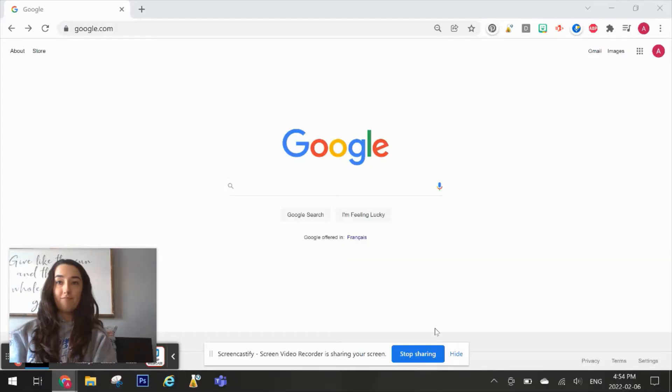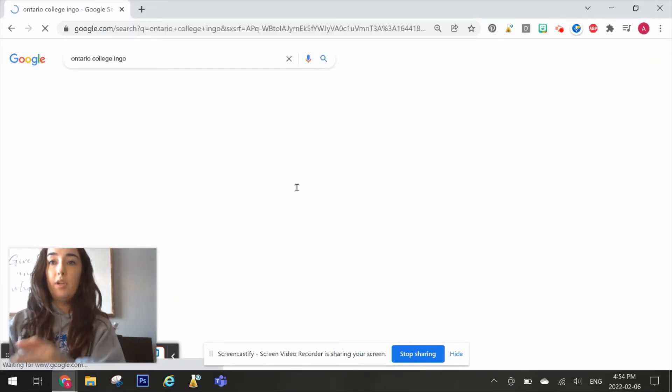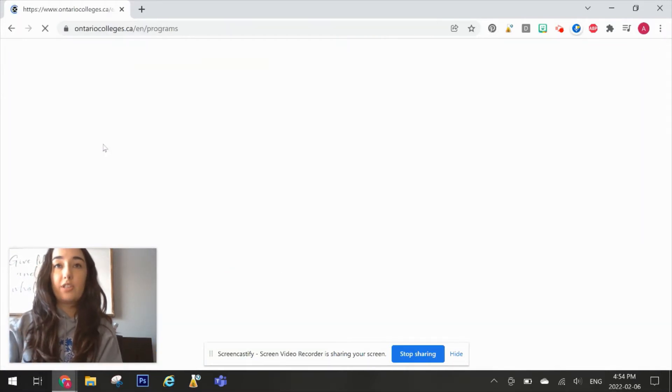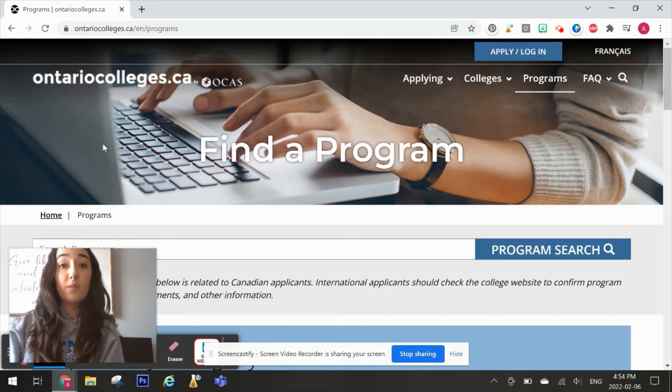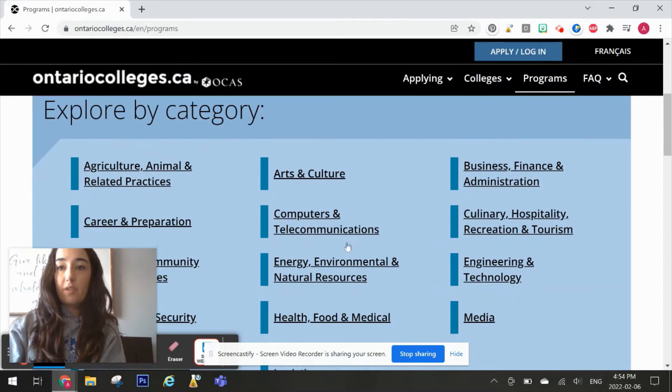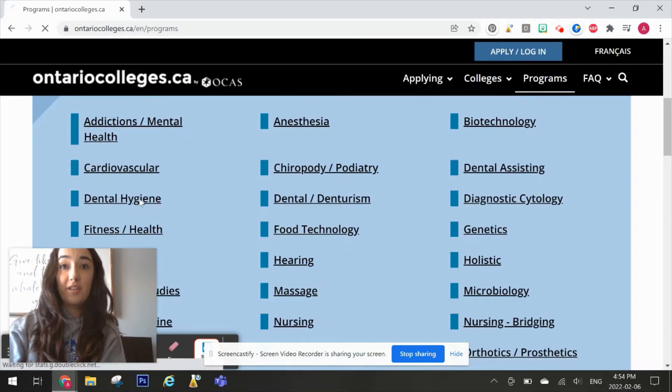If you're headed to college or university, you might need a math class or two to get in. If you're not sure which ones, let me show you. Let's start with those of you headed to college. I'm going to go to Google and type in Ontario College Info and click on the first one that's available, OntarioColleges.ca. This is an awesome website that allows you to browse all of the different programs that are available at Ontario Colleges.